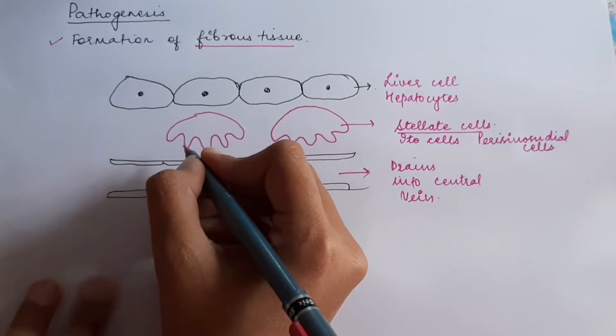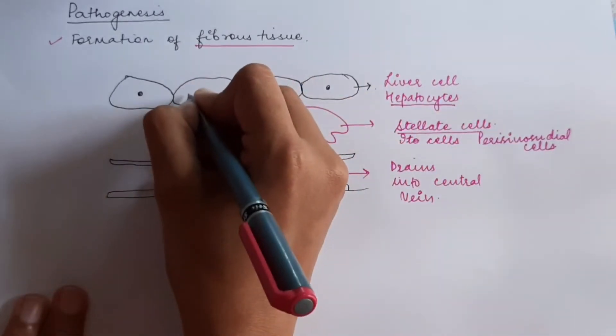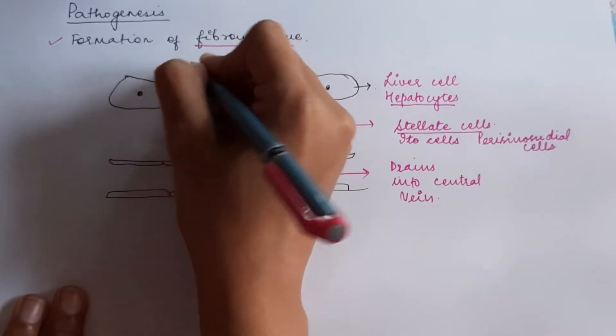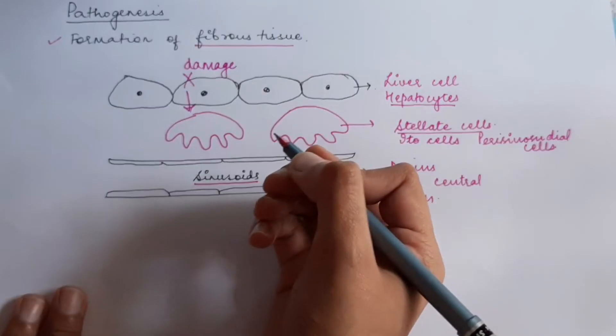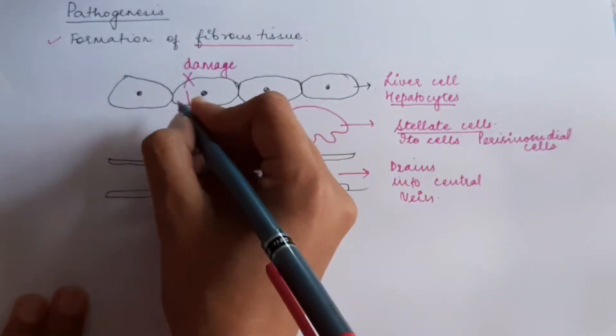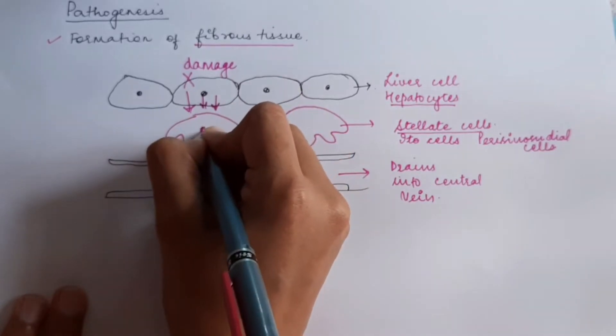So, what basically happens is when the hepatocytes are damaged—they may be damaged because of alcohol, virus infection, or other inflammation—they activate the stellate cells.